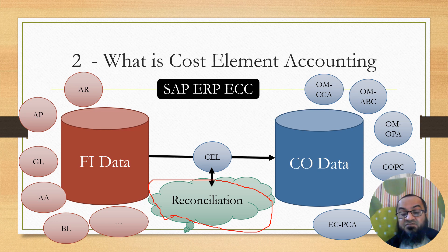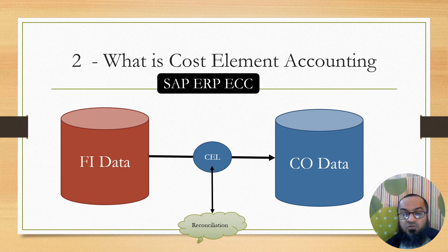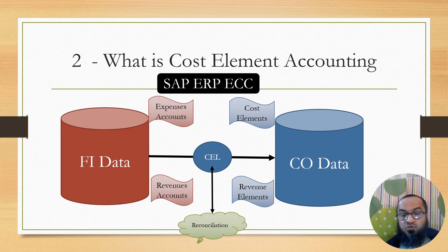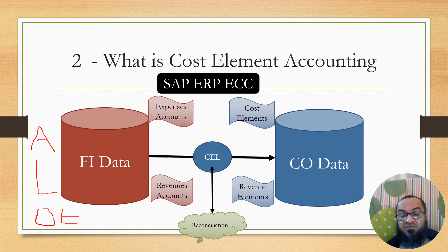Because data in the Controlling module is further processed and changed, there was a need to ensure that the totals in Financial Accounting matched the totals in Controlling. So cost element accounting served as a door of data entry into the Controlling module and also served the purpose of reconciliation between the two datasets. Only expense accounts and revenue accounts passed from Financial Accounting to Controlling — not asset, liability, or owner's equity accounts such as retained earnings and capital.